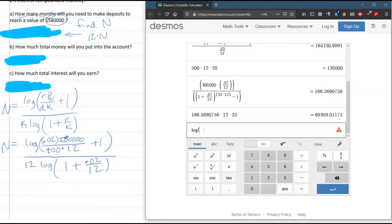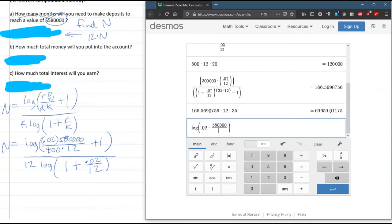I need to start with the log, so it's over in function, log, go back to main. I already had a parenthesis, you can undo, you can redo as well. So I'm going to log 0.02 times 5,800 divided by 400 times 12.